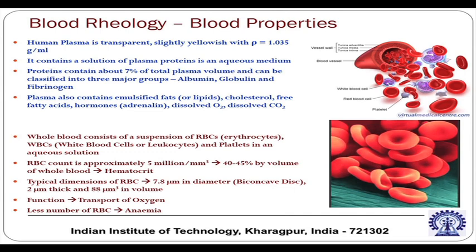Before getting into what C1, C2, C3 should be and on what parameters those will depend, let us quickly revisit blood properties. Human plasma is transparent — it is the watery part of blood, slightly yellowish, with a typical density of about 1035 kg per meter cube, similar to water density. It contains a solution of plasma proteins in an aqueous medium. Proteins constitute about 7 percent of the total plasma volume and can be classified into three major groups: albumin, globulin, and fibrinogen.